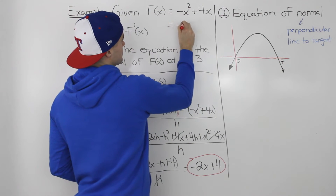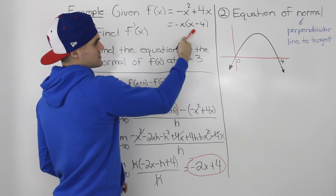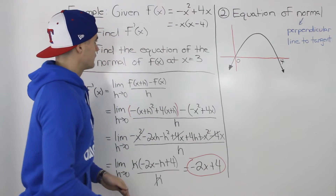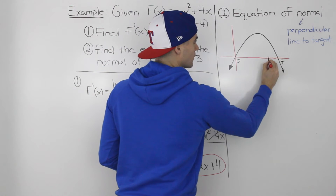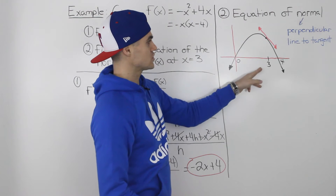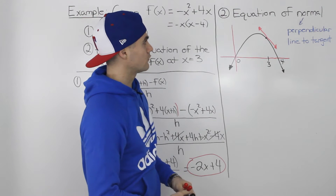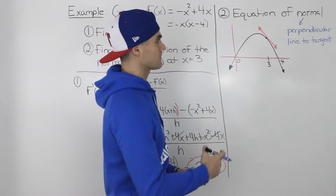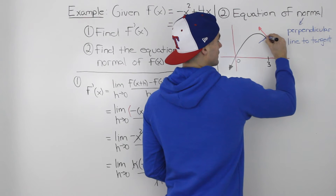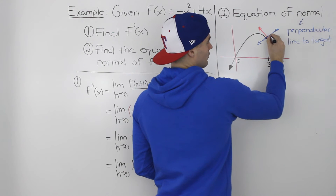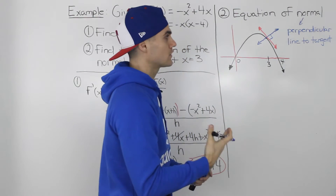The function has x-intercepts at 0 and 4, found by factoring out -x to get x(x - 4). We need the normal at x = 3, which is somewhere around here on the graph. Drawing a tangent line at x = 3 gives us the red line. However, we're finding the normal, which is the line perpendicular to that tangent — so the normal looks like this blue line, where the angle between the red tangent and the blue normal is 90 degrees.